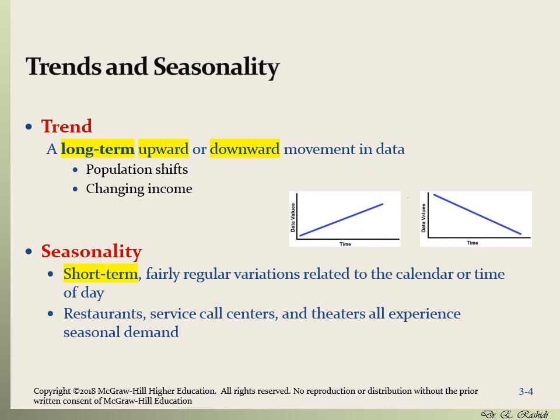So a trend is a long-term upward or downward movement in your data on average. Next, we have seasonality. Seasonality involves short-term and fairly regular variations in your data. It can happen monthly, during a year, or even during a day. For example, suppose we plot the amount of sales for a restaurant during a day — across 24 hours on the x-axis and amount of sales on the y-axis.